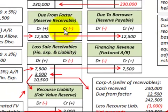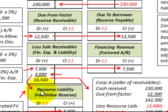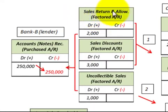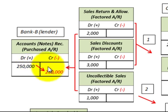Now let's look at how we handle the 'due from factor' and 'due to borrower' accounts after collection. For example, Bank B collected all $250,000 of the accounts receivable, but experienced $2,000 in sales returns and $3,000 in sales discounts. We originally set aside $12,500 as the reserve for these items.